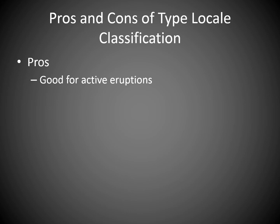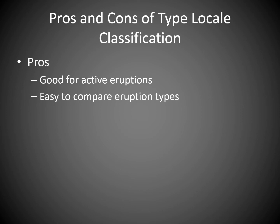This scheme is good for active eruptions because it's based on observation — how high are the columns, what type of products come out, how extensive is the area covered. It makes it pretty easy to compare eruption types, especially today because there's so much video out there. Even if you've never seen an active volcano in person, hop on YouTube and you can find 40 examples of Vulcanian eruptions, lots of Plinian examples, and so on.